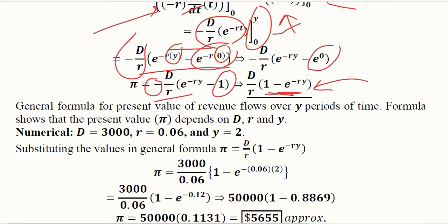This is a general formula. Y is the periods of time involved in this example, and π is the present value that depends upon D, R, and Y. Because in the formula, we can see D, we can see R, we can see Y.